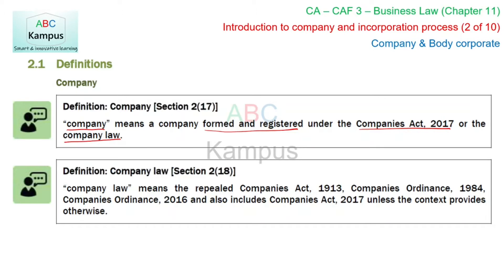اب company law سے کیا مراد ہے؟ Company law کے اندر Companies Act 2017 بھی موجود ہے، اس سے previous laws بھی موجود ہیں۔ اگر آپ properly اپنی company کو بناتے ہیں اور registered کرواتے ہیں under the relevant company law — چاہے وہ Companies Act 2017 ہو یا اس سے پہلے جو laws تھے، ان کے اندر کوئی company registered ہو چکی ہو — تو وہ ایک company سمجھی جائے گی۔